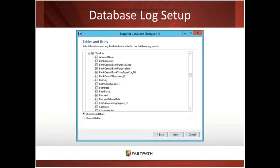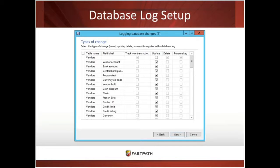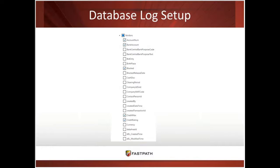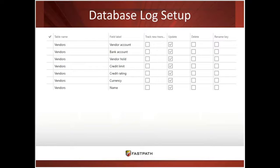Here's what the database log setup looks like in AX 2012. You can go to the vendors table and choose which fields you want to track. On the next screen you can choose what action to track for each field: inserts, updates, or deletes. In Dynamics 365, the same functionality looks similar — you can come in, select what you want to track for vendors, and specify whether you want to track inserts, updates, or deletes for each of those fields.